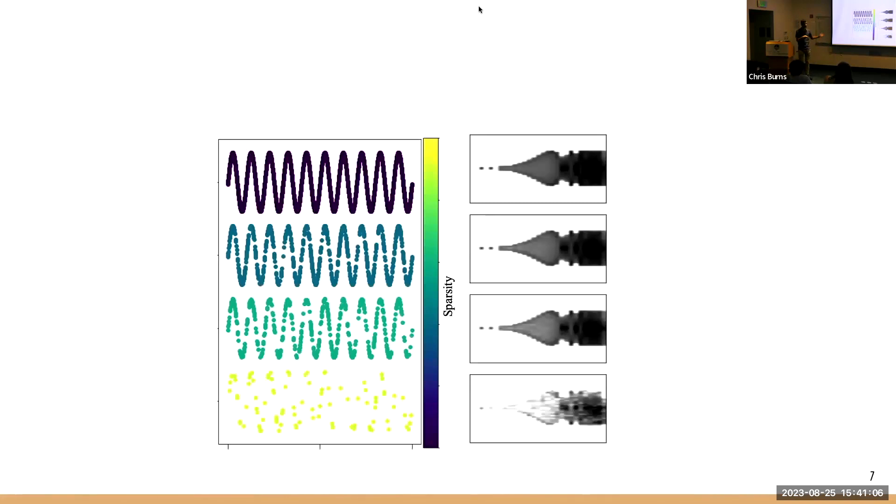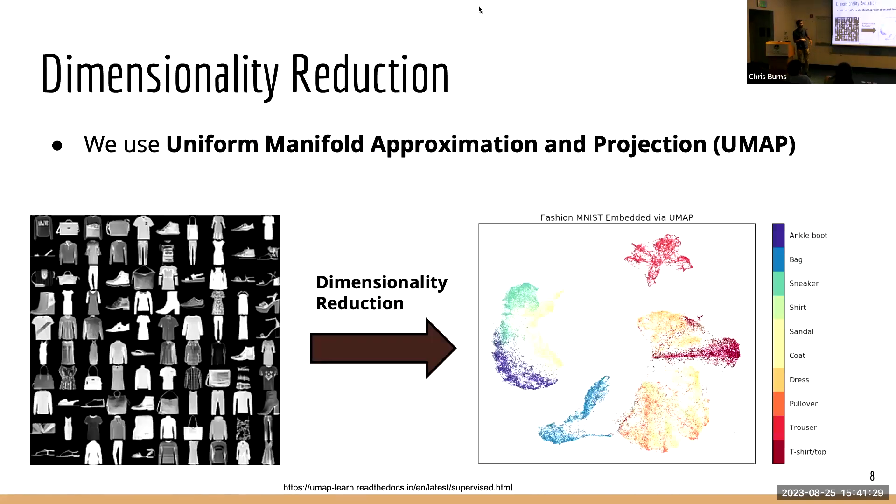So here's an example of a set of light curves and we're just adjusting the sparsity of points sampled along from the top is uniform and then bottom is very sparse. This is just to get a sense of what the DMDT maps look like, how they sort of map between light curve to map. Okay, so secondly, once we have these DMDT maps, we apply our dimensionality reduction.